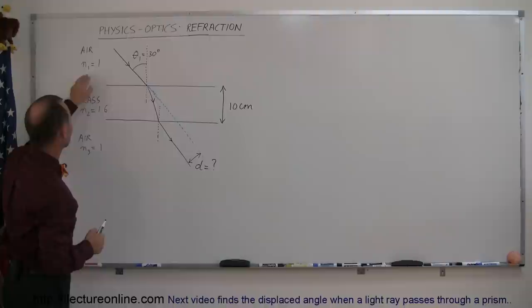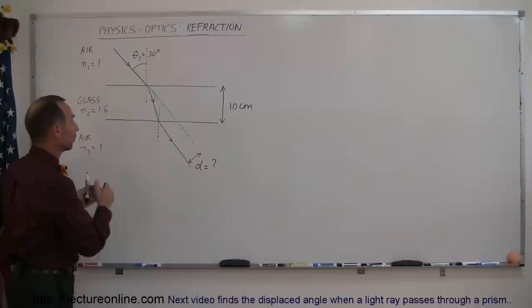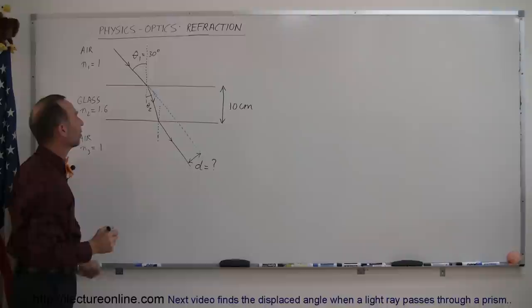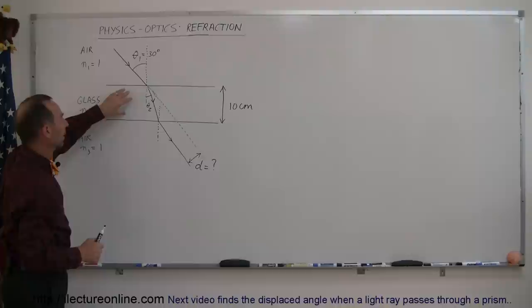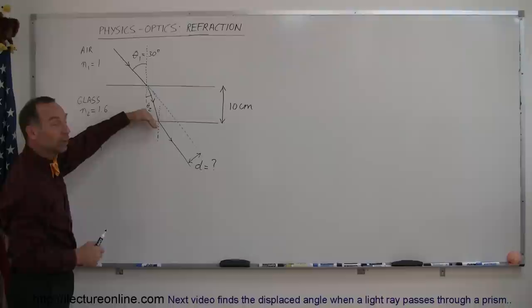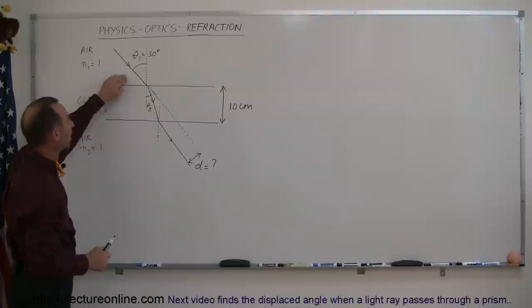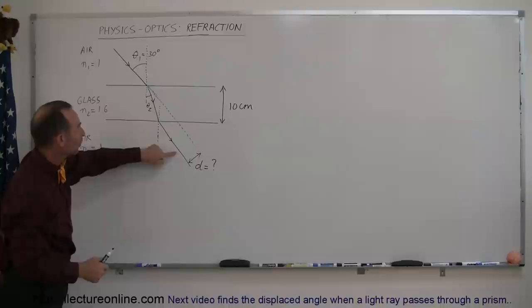The light will bend — it will refract towards the normal — so that the angle of refraction, theta sub 2, is smaller than the angle of incidence, theta sub 1. Then it travels across the slab and reaches the second boundary, going back from glass into air. Since the beam is now traveling from a region of higher index of refraction to lower, the light bends away from the normal. Since both sides of the slab are air, the direction of the beam after it leaves the slab will be exactly the same as the direction as it entered.